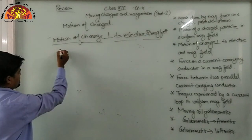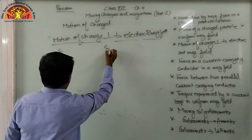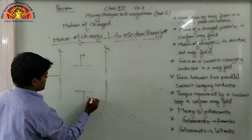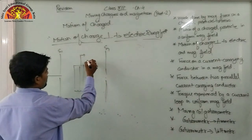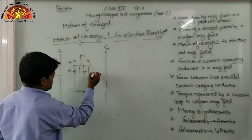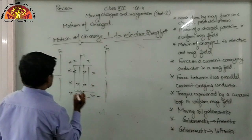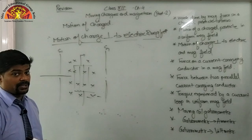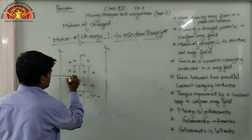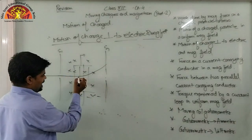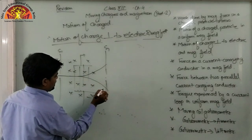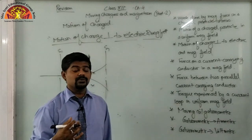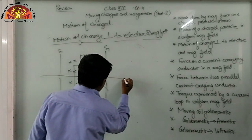Suppose we have two slits, S1 and S2. A charged particle moves from here. We apply an electric field using two poles of a battery — positive and negative — generating an electric field. Along with this, a uniform magnetic field is placed here, represented by crosses going into the page. When this charged particle — suppose an electron — is placed in both electric and magnetic fields, both forces start acting on it. Due to electric force it may deflect one way, and due to magnetic force it may go the other way. If both forces are equal, they cancel each other out, and the electron passes straight through.